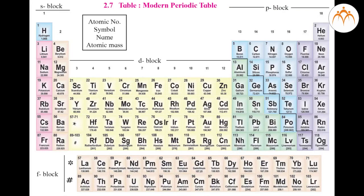Lithium will give away one electron to form a bond. Beryllium will give away two electrons to form a bond. Carbon will form four covalent bonds, so it has a valency of four. As we go further, nitrogen will form three bonds, oxygen forms two bonds, fluorine forms one, and neon forms zero bonds to make a compound. The next property we are going to look at is the atomic size.